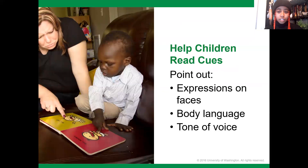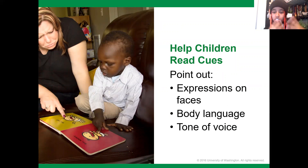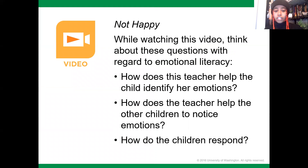Now we're going to move to identifying emotions. Identifying emotions helps children, and we're going to talk about helping children read cues — pointing out expressions on faces, body language, and tone of voice. In the first picture we saw, you knew what that child was feeling because you read the expression on his face, his body language, even though you couldn't hear his tone of voice. These three things are part of emotional literacy. For children, we have to develop these skills so they're able to recognize other people's emotions and identify them.